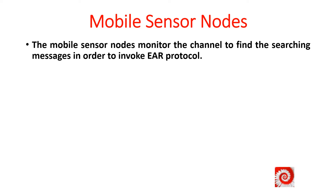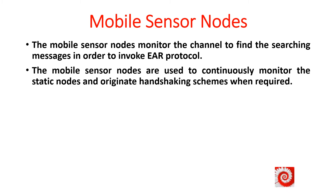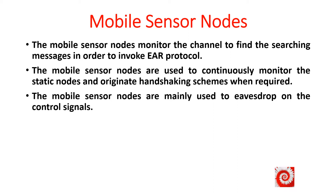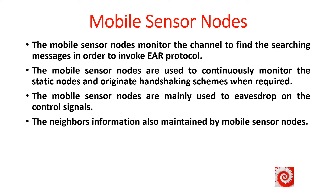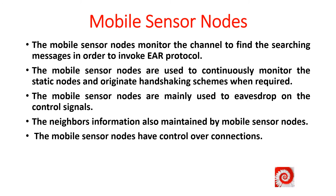The mobile sensor nodes monitor the channel to find the searching messages in order to invoke EAR protocol. The mobile sensor nodes are used to continuously monitor the static nodes and originate handshaking sequences when required. The mobile sensor nodes are mainly used to control signals, and neighbors' information is also maintained by mobile sensor nodes.